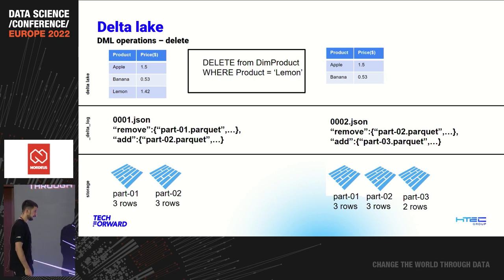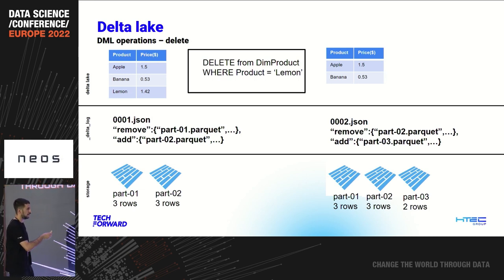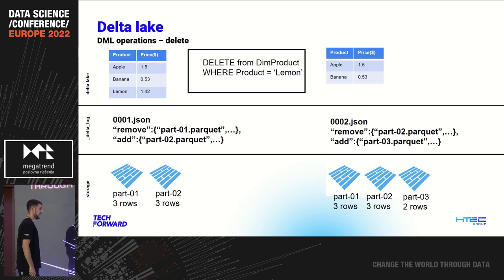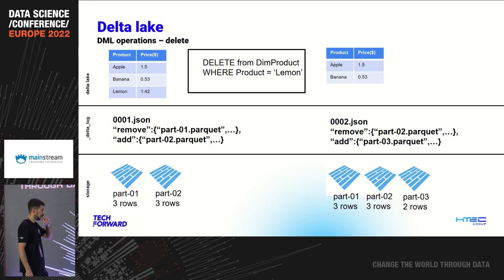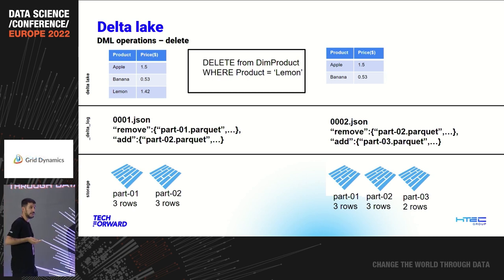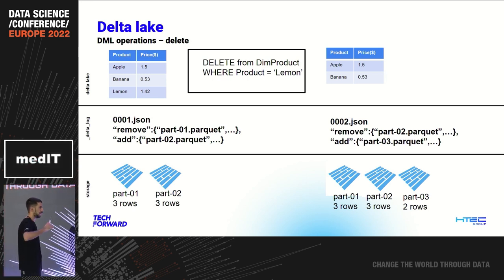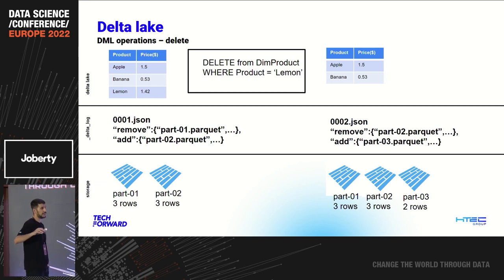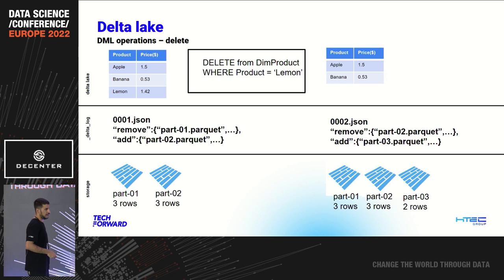If you want to delete something from the table, again we write a delete statement. On the left we have the latest state of the table — last commit was 0.01 JSON. On the right we have a new state. We are removing part-02 Parquet, again only logically. And interestingly, even when we delete rows we are adding a new Parquet file. Parquet is immutable — we cannot change that. But we add a metadata control layer that says: now part-03 Parquet contains only two rows, and that is the latest state of the table. Part-01 and part-02 are only logically deleted.